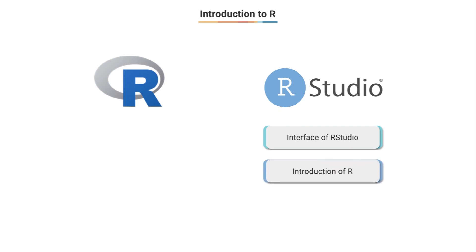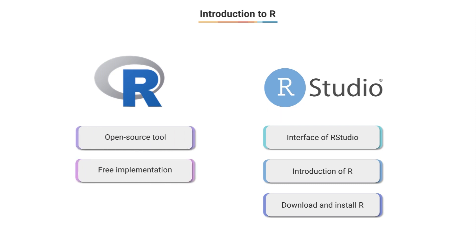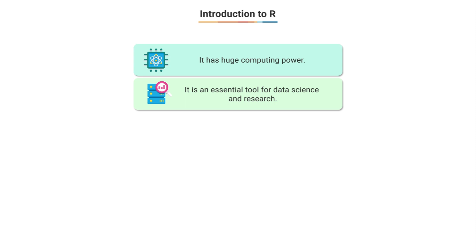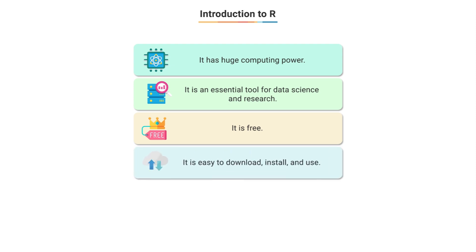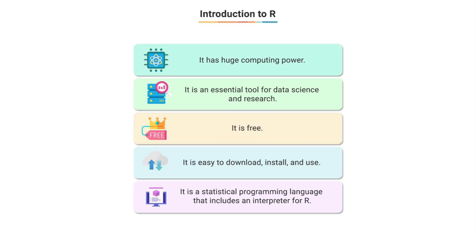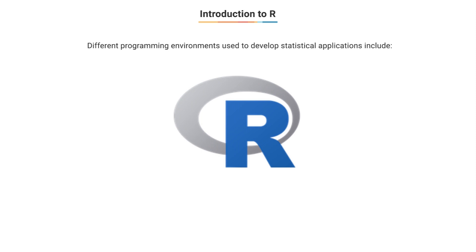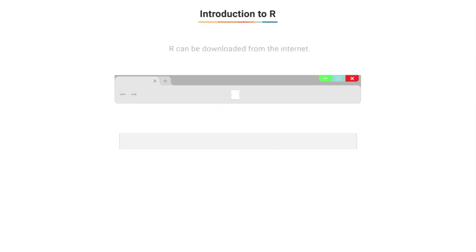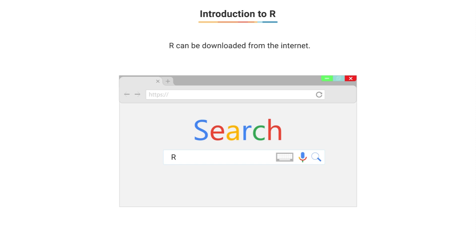R is an independent open-source tool offering free implementation. It is an extension of the S language, has huge computing power, and is an essential tool for data science and research. A key advantage is that it is free, easily downloadable and installed, and easy to use. R is a statistical computing environment that includes an interpreter with which the user can interact in a conversational manner. It is one of several programming environments used to develop statistical applications — others include Gauss, Julia, Python, Stata, etc. The best way to obtain R is by downloading it from the internet by searching for R project.